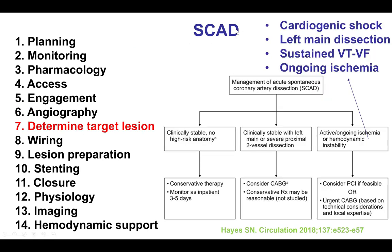So, what to do for such patients? It depends on their presentation. If they are clinically stable without high-risk anatomy, then conservative treatment is preferred. If they have a two-vessel dissection in the proximal segment or left main, then bypass is considered. But if they have ongoing ischemia or hemodynamic instability, then revascularization is needed with either PCI or coronary bypass graft surgery.